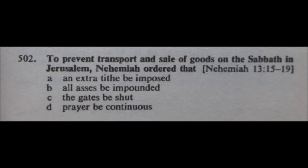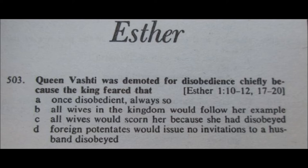Question number 503, and it's the first question from the Book of Esther. Queen Vashti was demoted for disobedience chiefly because the king feared that A) once disobedient, always so, B) all wives in the kingdom would follow her example, C) all wives would scorn her, or D) foreign potentates would issue no invitations. I remember this story and I'm very sure the answer is B, all wives in the kingdom would follow her example.